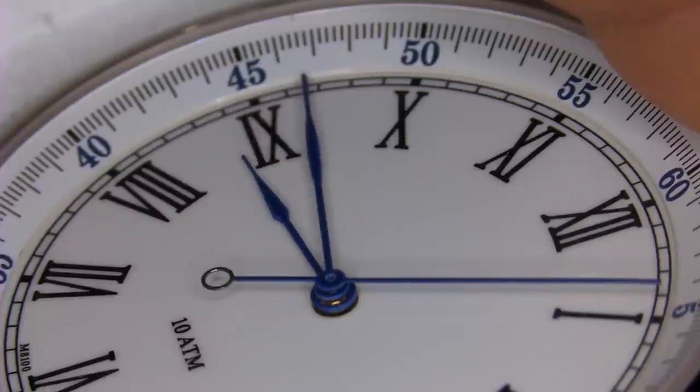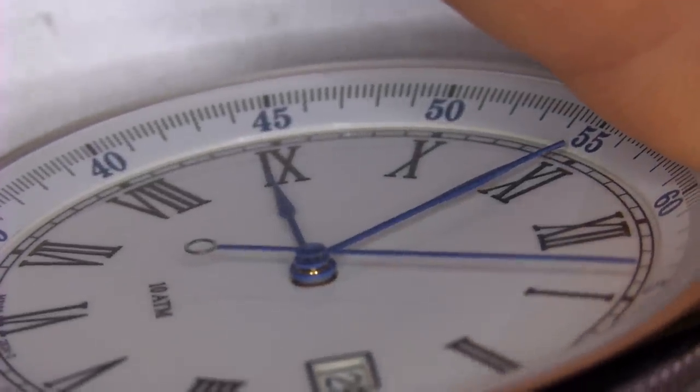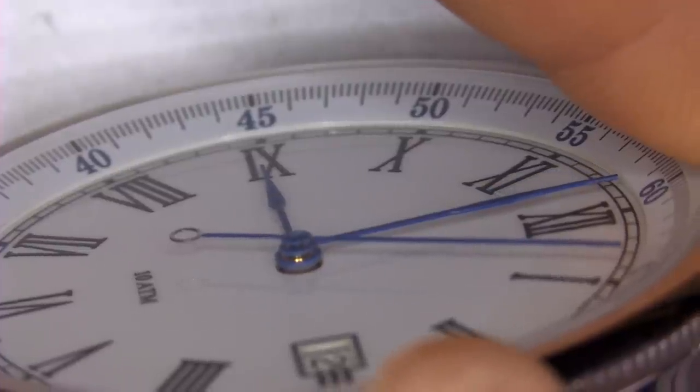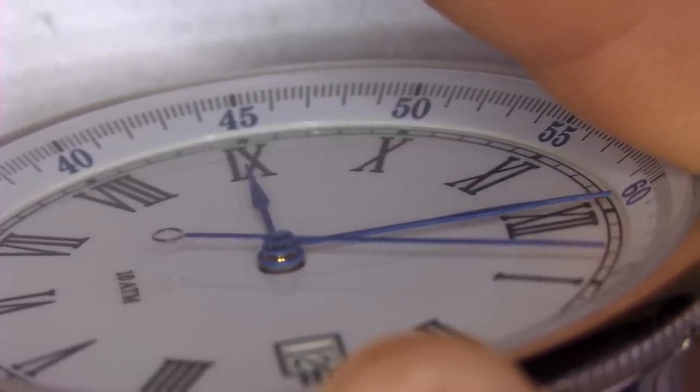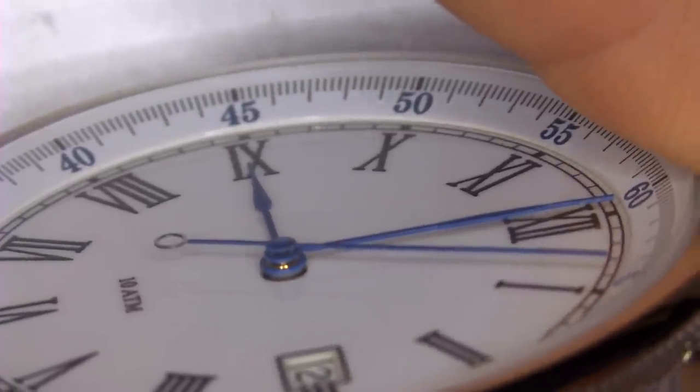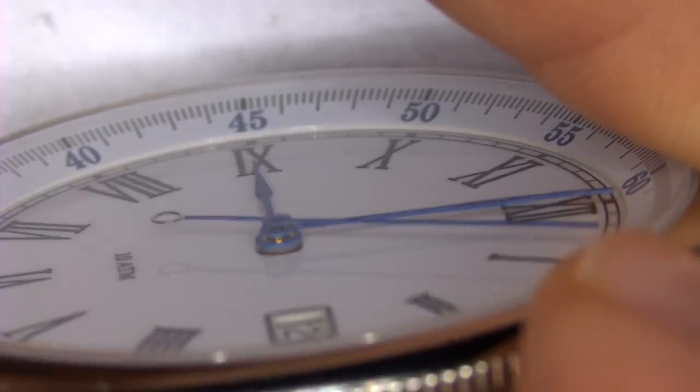Now we're going to demonstrate how you can check the hand alignment on the watch. As you can see, we're looking across the watch so that we can look down the hour hand to see when it's pointing directly at the marker. We advance it slowly, focusing on the hour hand as it approaches the 9 o'clock marker.